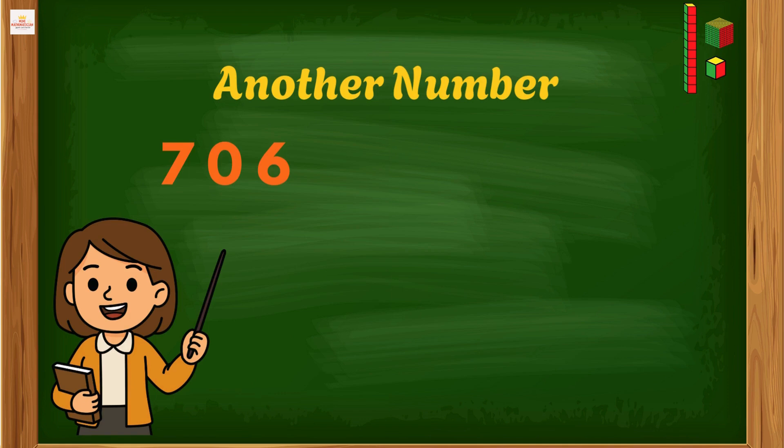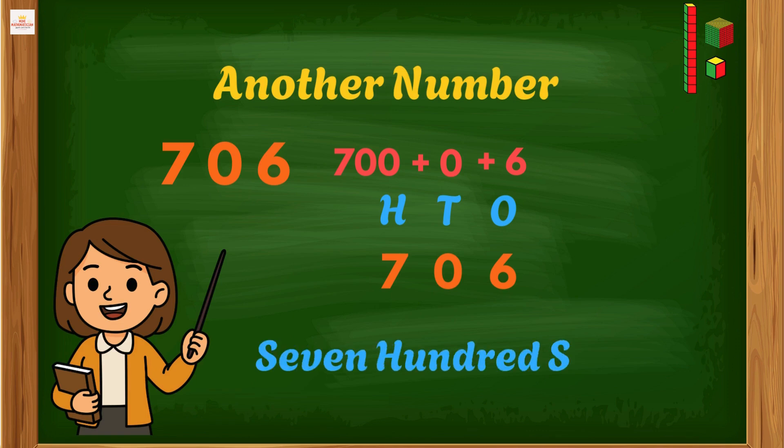Now let's put this number into place value. 6 is in the ones place, 0 is in the tens place, 7 is in the hundreds place. So the number is 700 plus 0 plus 6. And when we read it aloud, it is 706. Even if there's a zero in the tens place, the number still works perfectly.